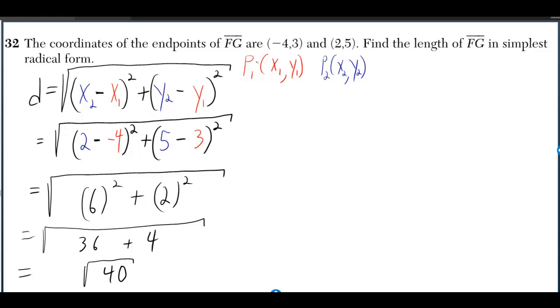We'll let (-4, 3) be point 1 with x1, y1. So x1 is -4 and y1 is 3. We'll let (2, 5) be point 2 with x2, y2. So x2 is 2, y2 is 5.